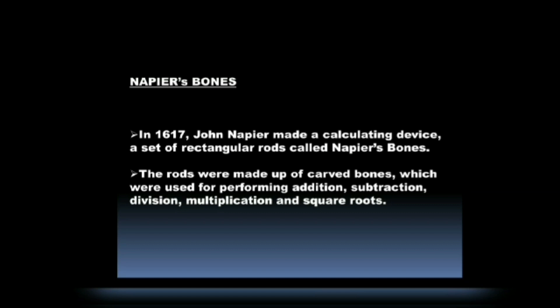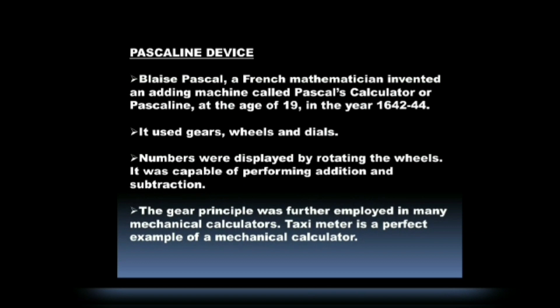The rods were made up of carved bones, which were used for performing addition, subtraction, division, multiplication, and square roots. The difference between Abacus and Napier's Bones is that Abacus is only used for four operations: addition, subtraction, multiplication, and division. Napier's Bones can perform five operations: addition, subtraction, multiplication, division, and square roots.